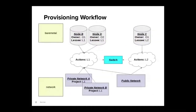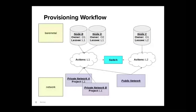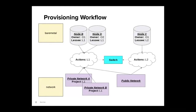Once the nodes are leased, the lessee can move into the provisioning workflow. Lessee L1 can use the two nodes they've leased — nodes B and D — in conjunction with the public network and the two private networks that they've created. They can perform a variety of actions: provision a node, attach networks to their nodes, and network actions will be reflected on the switch. Lessee L2 can do similar things, but they're limited to node C and the public network.